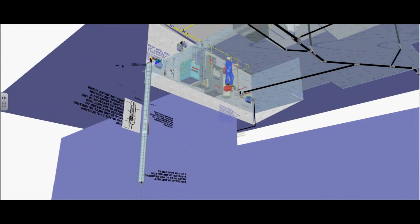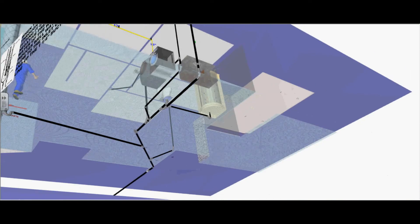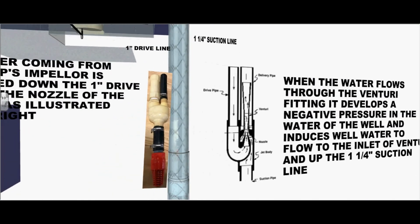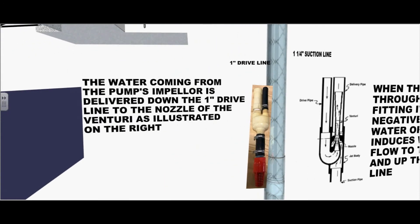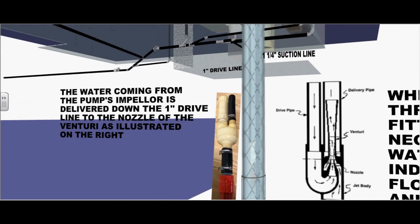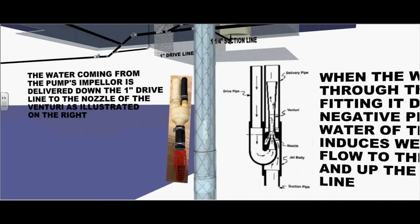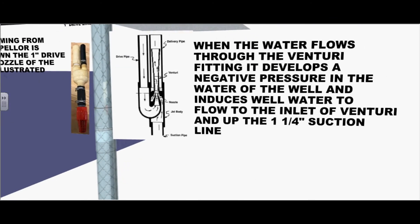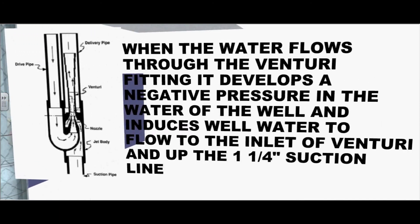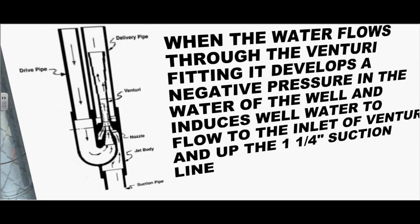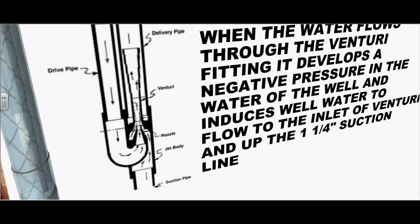Let's go further down the well and rotate around and we will take a look at the jet assembly. The water coming from the pump's impellers is delivered down the one inch drive line to the nozzle of the venturi as illustrated on the right. When the water flows through the venturi fitting, it develops a negative pressure in the water of the well and induces well water to flow to the inlet of the venturi and up the inch and quarter suction pipe.